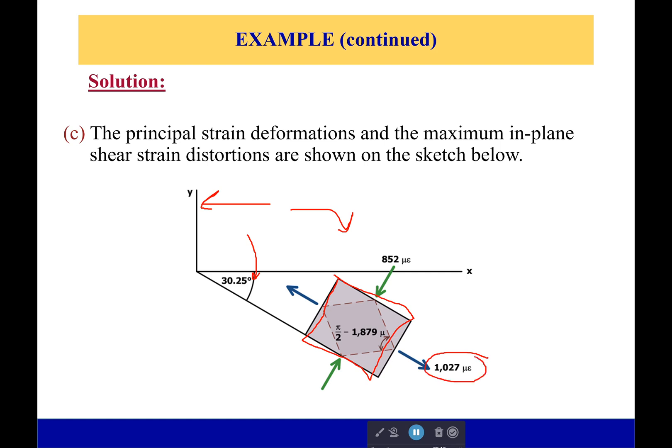So once it got stretched out, it was 1027 microstrains along one corner, 852 microstrains along the second corner, we're just squishing it in, which makes it this oblong diamond shape. And then the angle right here, this angle, is going to be pi over 2 minus our shear strain, pi over 2 minus our shear strain. Because remember, shear strain is a change in the angle.